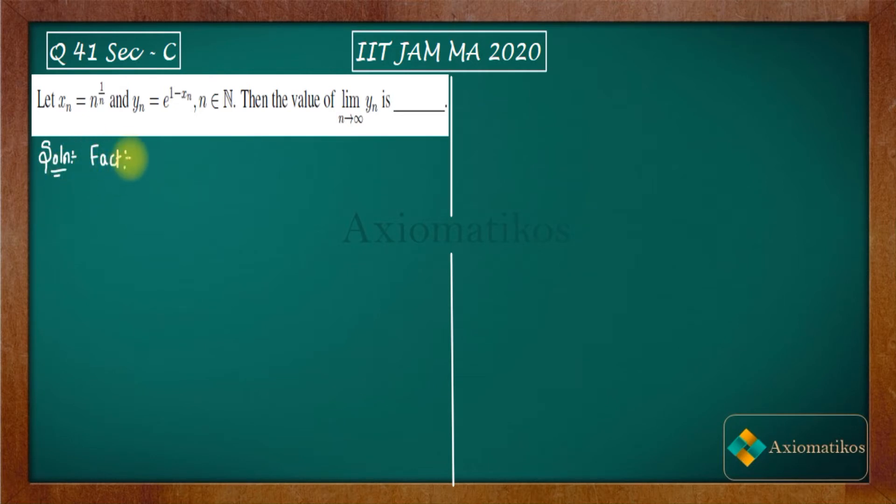What is this fact? If we have limit, let us say X going to C, F of GX. If we have composition of function, why we are doing this composition of function? Because in your question also we have this composition. All right.